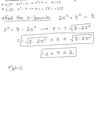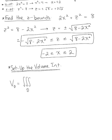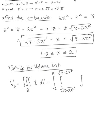We're ready to set up the volume integral. The volume of solid region D is defined as the triple integral over D of 1 dV. The outer integral is x from negative 2 to 2. The middle integral is z from negative square root of (8 minus 2x squared) to positive square root of (8 minus 2x squared). The inner integral is y from x squared plus z squared to 16 minus 3x squared minus z squared. The order of integration is dy dz dx.